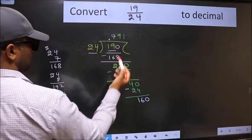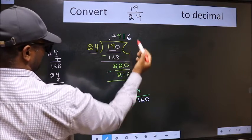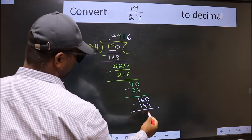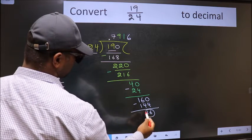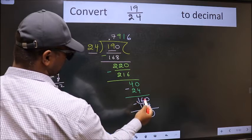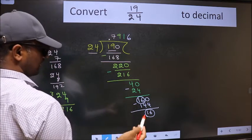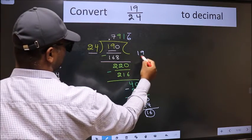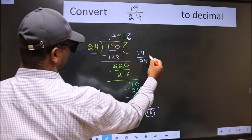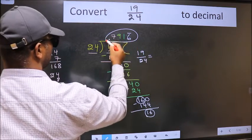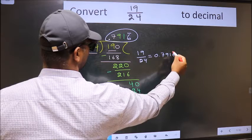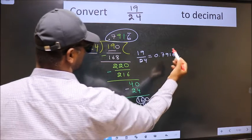A number close to 160 in the 24 table is 24 times 6, 144. Now we should subtract. We got 16 again. Earlier also we got 16, that means we get a bar on this number. Therefore, decimal of 19 by 24 is 0.7916 with a bar on this number. This is our answer.